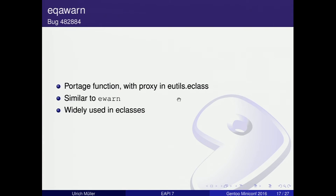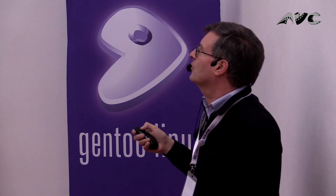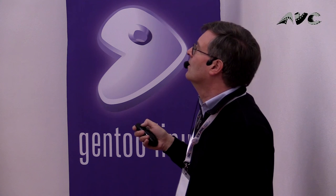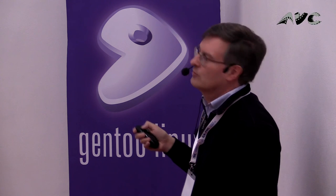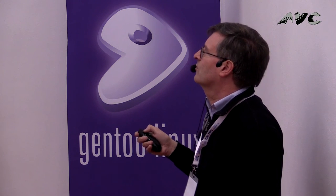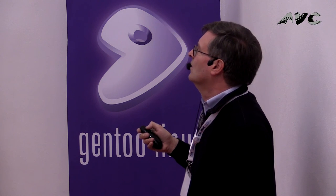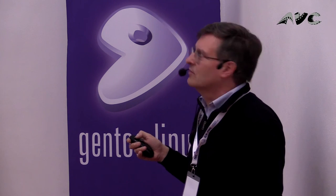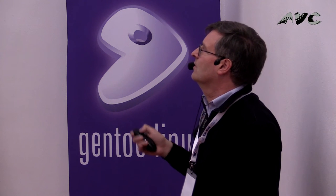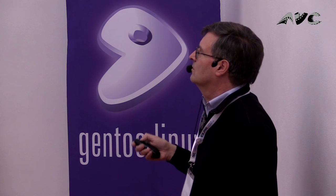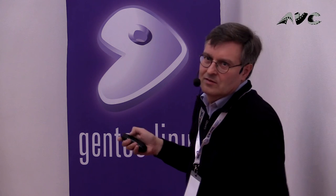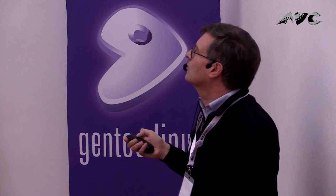There's an output function eqawarn. It exists in Portage since a long time, and there's a proxy function in e-utils. So if the package manager doesn't support it, e-utils will include it, which means all ebuilds using it have to inherit the eclass. It's an easy feature to add to the package manager.